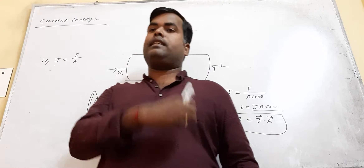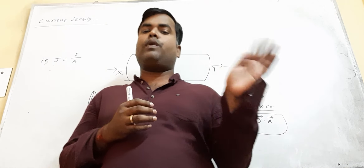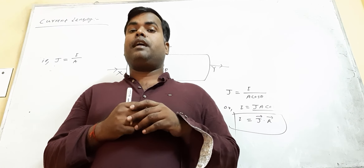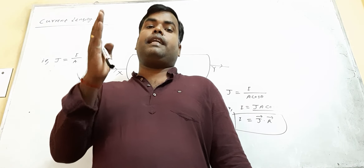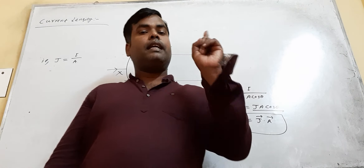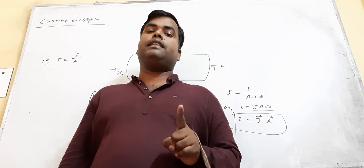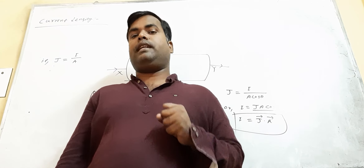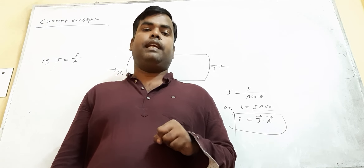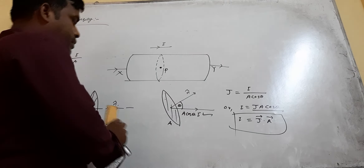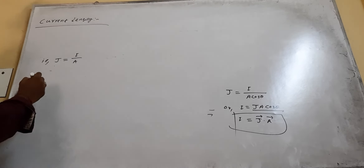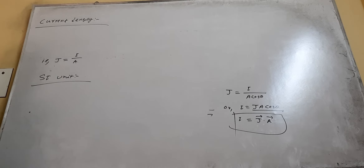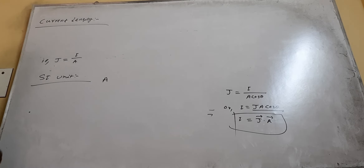Electric current is the dot product of current density vector and area vector. Is current density a vector quantity? Yes, current density is a vector quantity. Its direction is the same as the direction of electric current. Note: electric current is a scalar quantity, but current density is a vector quantity. The SI unit of current density is ampere per meter squared (A/m²).